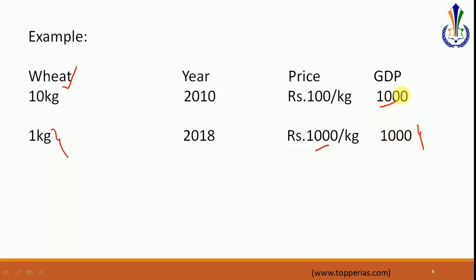Here you will see that it appears GDP between 2010 and 2018 has not changed — it is the same. However, the quantity of goods has actually reduced. So this GDP is not giving us a clear picture. In this case, we introduce the concept of real GDP, where for the year 2018 we set a base year — suppose the base year is 2010 — and the goods produced are compared to the prices of this base year.